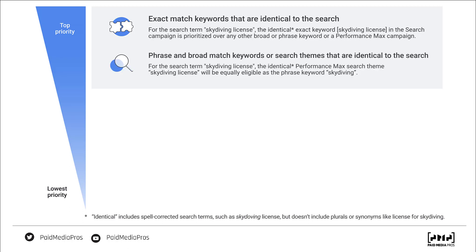The next level is going to be phrase and broad match keywords or search themes that are identical to the search. Using the skydiving licenses example throughout this graphic: the search term 'skydiving license' will match for the Performance Max search theme of skydiving license when it's a perfect match, but that will be equally as eligible as the phrase keyword 'skydiving.' This is good news for anybody worried about Performance Max search themes stealing volume from phrase and broad match search terms — those would have to match identically. Make sure you have negative keywords and match types set up appropriately so you can always prioritize search keywords versus Performance Max search themes based on your preferences.